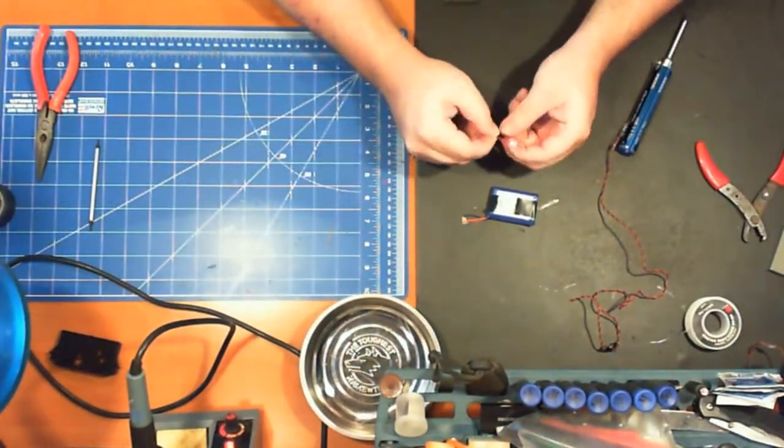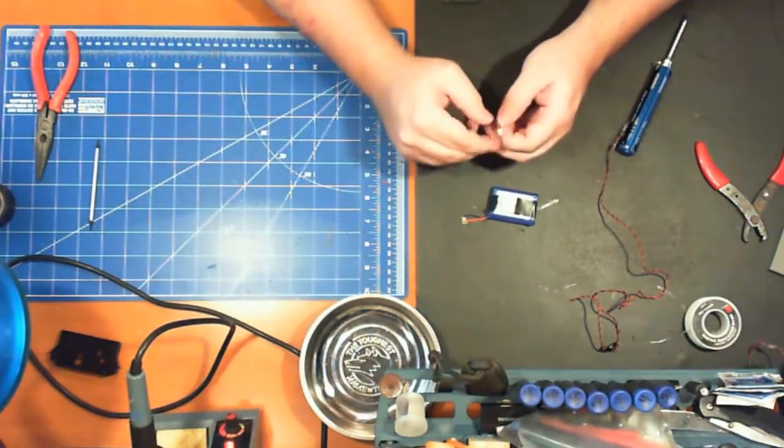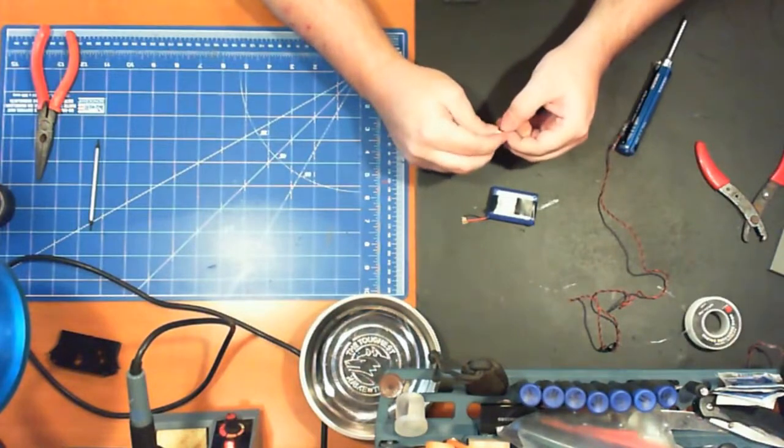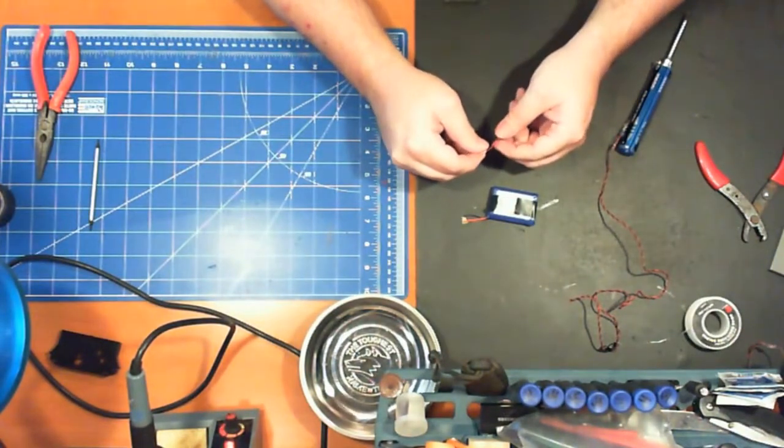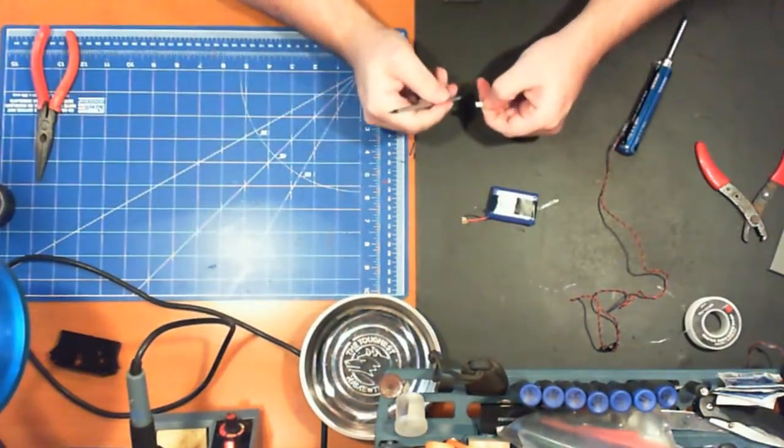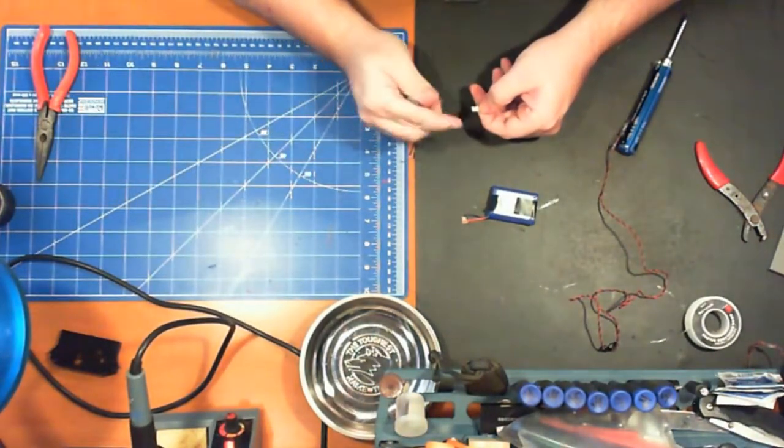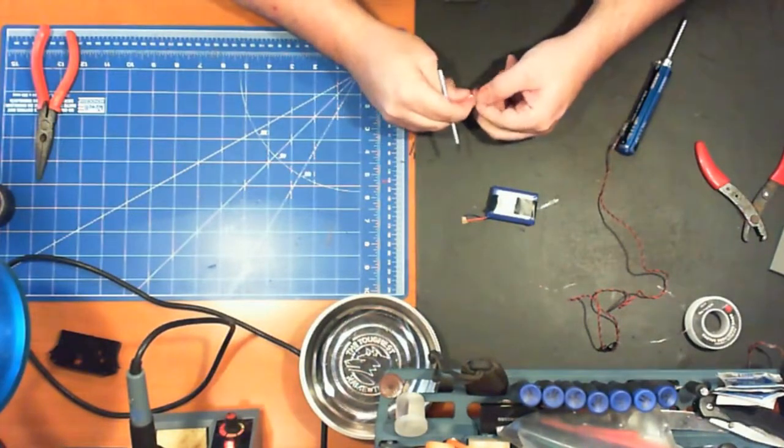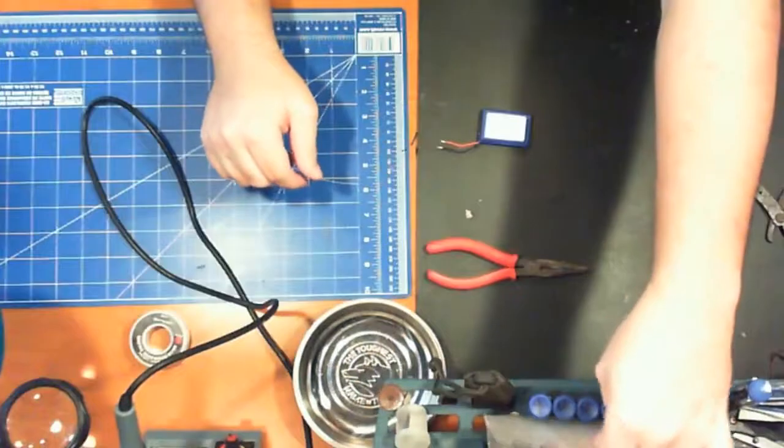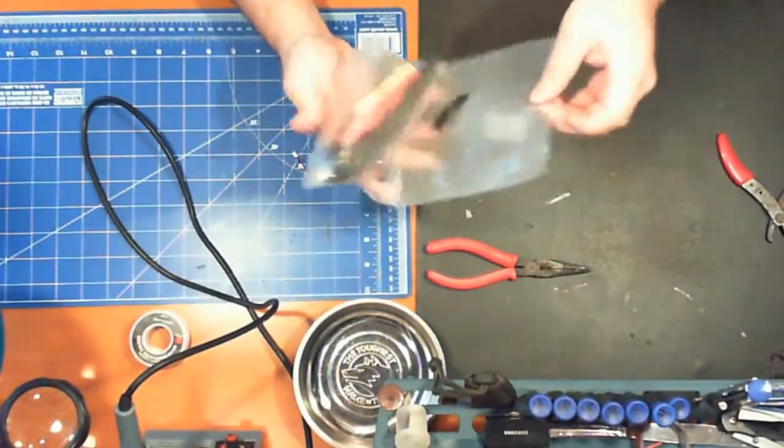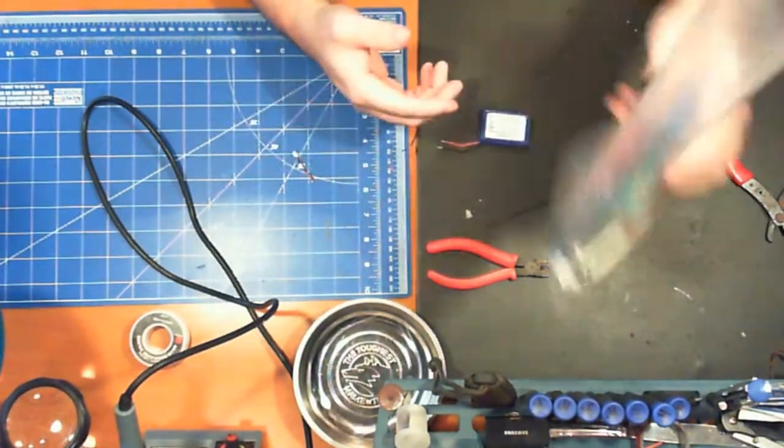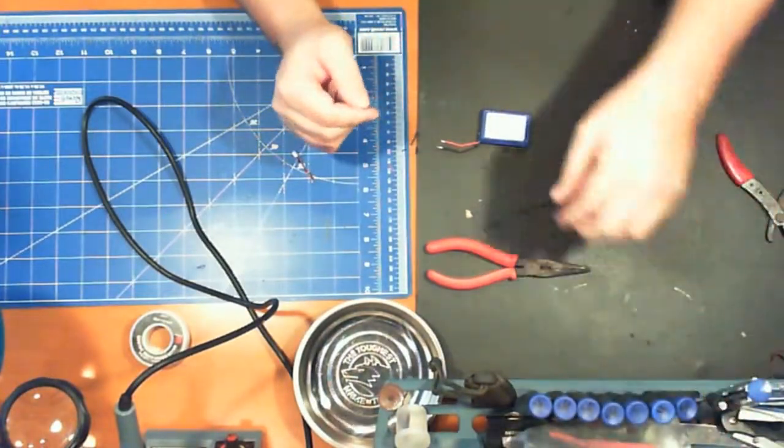One important thing to note when you order your connector, you're going to want to check it against your original battery. It just so happens the JST connectors that I'm using, the red and black pins are swapped. So I actually have to swap them around or solder them the opposite colors. I'm choosing to swap them around just so the colors remain correct. I'm also going to be using some shrink tubing just to seal it up once I'm done.